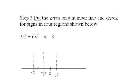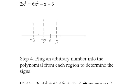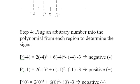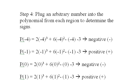I'm going to check negative 4 in the leftmost region, negative 1 in the next region, 0 in the middle region, and positive 1 in the rightmost region. I don't really have to fully evaluate the polynomial — I just need to plug in an arbitrary number from each region to determine the sign.